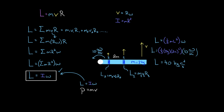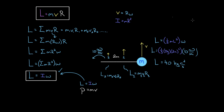To recap: if you have a point mass where all the mass rotates at the same radius, the easiest formula for angular momentum is L = MVR. However, if you have an extended object whose mass is distributed so that different points are at different radii, the easiest formula is L = Iω, where I is the moment of inertia and ω is the angular velocity.